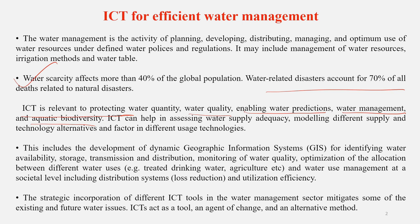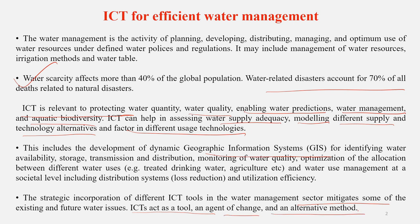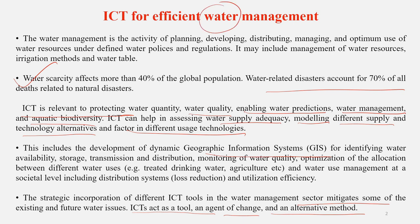ICT can also help in assessing water supply, modeling different supply and technology alternatives, and factoring in different use technologies. In many ways ICT can help with water management. The incorporation of different ICT tools in the water management sector is very critical because it can mitigate existing and future water issues. ICT provides an opportunity as a tool or agent of change and an alternative method to manage this precious natural resource.